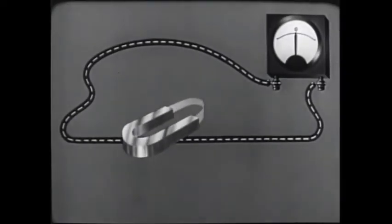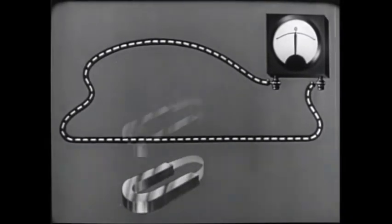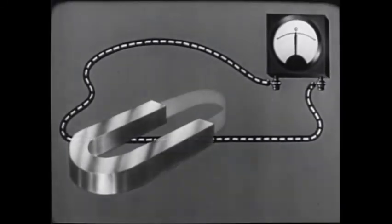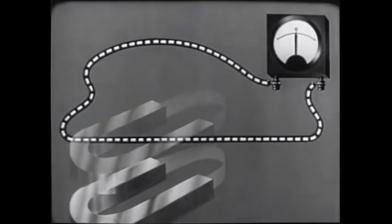We can change the amount of electric current flow in several ways. Move the magnet faster, more current flows. Use a stronger magnetic field, still more current flows.